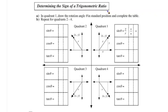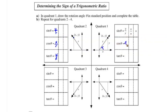Let's determine the sign of a trigonometric ratio. We have a terminal arm rotating around the coordinate system. We want to draw the rotation angle and complete the table for all quadrants. We know sine is y over r, cosine is x over r, and tangent is y over x. As the terminal arm rotates, the quadrant changes the sign of x and y, which changes these ratios.